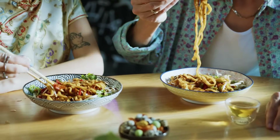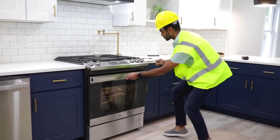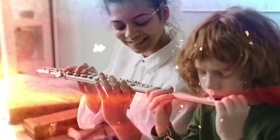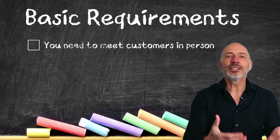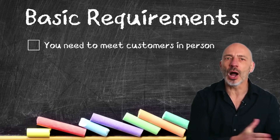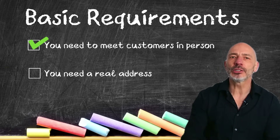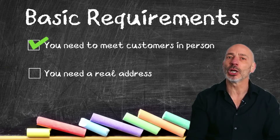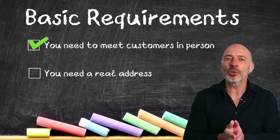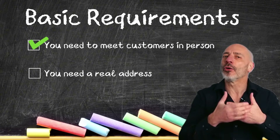No matter what kind of business you run — whether it's a brick-and-mortar shop like a dentist's office or a Chinese restaurant, a service area business like a plumber or electrician, or even a home-based business like a music teacher or therapist — you can claim a Google Business Profile if you meet a few basic requirements. You need to meet customers in person, either at your location or by traveling to them. You also need a real address.